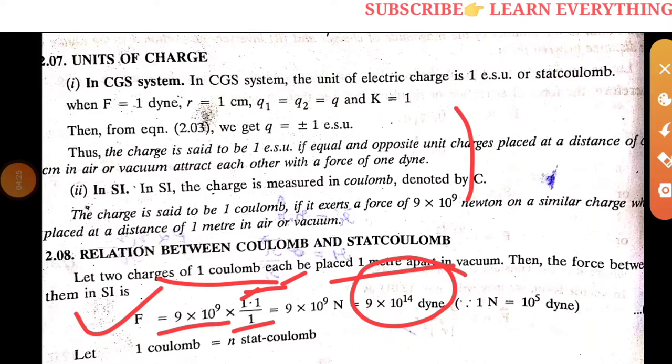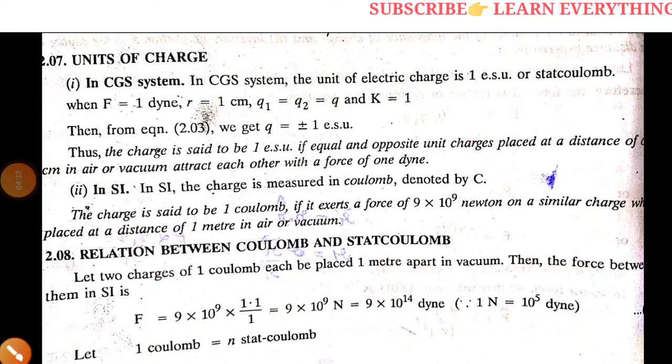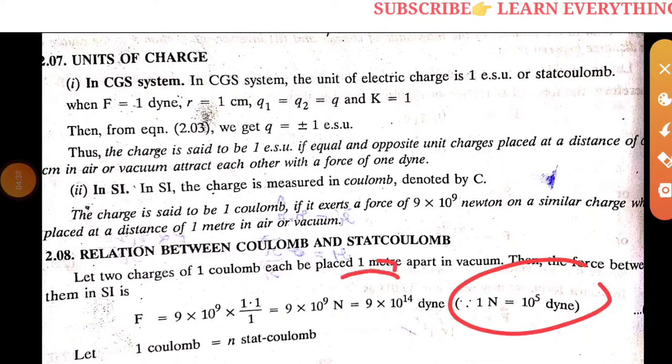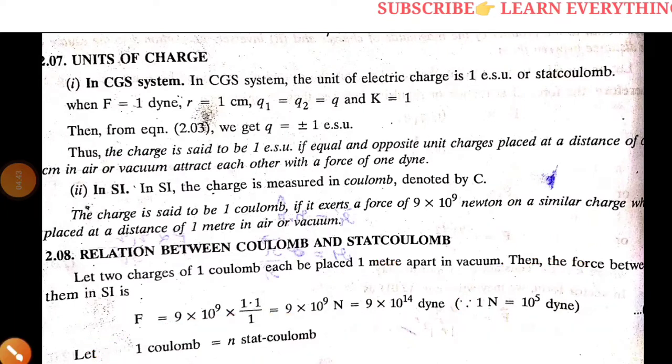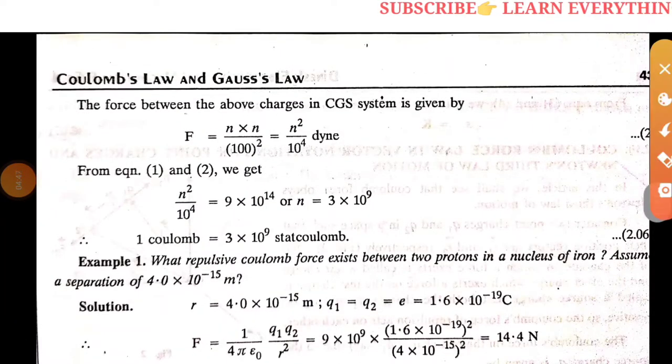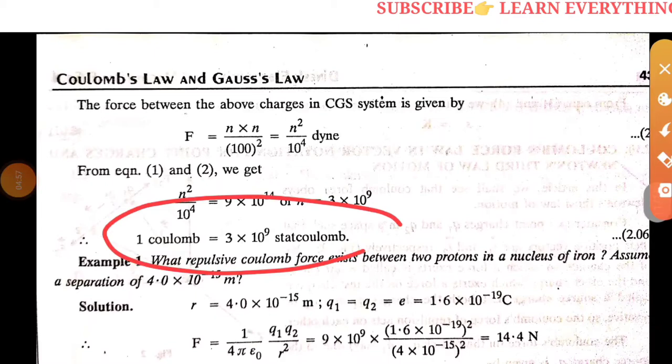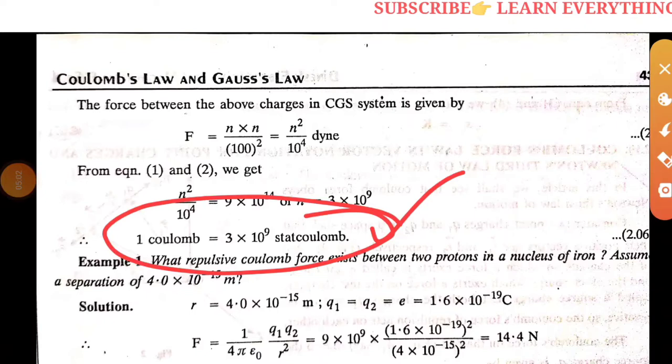So 9 into 10 to the 9 newtons equals 10 to the 14 dynes, which is 10 to the 5 dynes squared over 10 to the 4 cm squared. If we solve these two equations, we get the relation: 1 coulomb equals 3 into 10 to the 9 stat coulombs. We have to remember this relation.